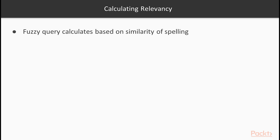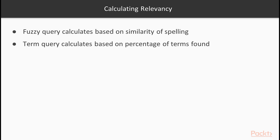One quick note on calculating relevancy: the type of query clause actually determines how relevancy is calculated. For instance, a fuzzy query calculates score based on the similarity of spelling of found words relative to the original search term. A fuzzy query is a term level query, so it focuses on taking a single term and finding all terms that are within a specified fuzziness. To the contrary, a term query uses the percentage of terms that are found. In Elasticsearch, term query relevancy is the algorithm used to calculate the similarity of content of full text relative to a query term.